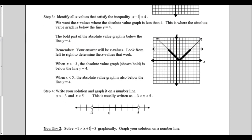We're looking for where the absolute value, the v-shape, is less than the horizontal line — the part that's below. Remember, the answer we want to give are the x values, so we look from left to right. On the left, my x value is negative 3; when x is greater than negative 3, the absolute value is below the line. The right solution is at x equals 5; when x is less than 5, the absolute value is also below the line y equals 4.